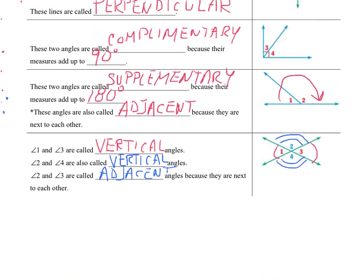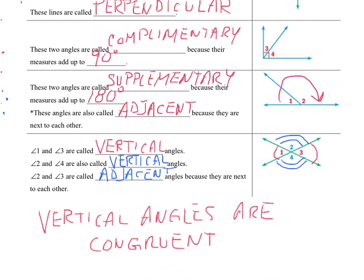One of the things we also want to notice is that when you have vertical angles, the angles across from each other are equal to each other, and because of that we can use that information — if we know one of them — to find the other one. Vertical angles are congruent. So the angle measure 1 is the same as angle measure 3, and angle 2 is the same as angle measure 4.